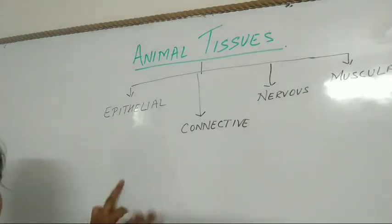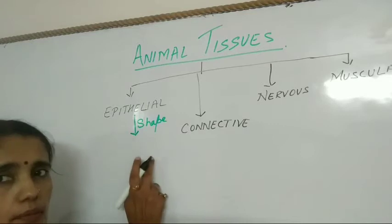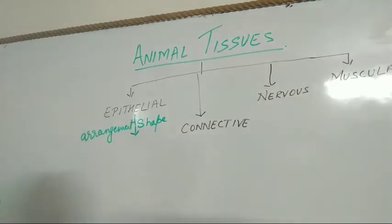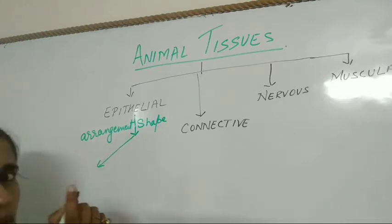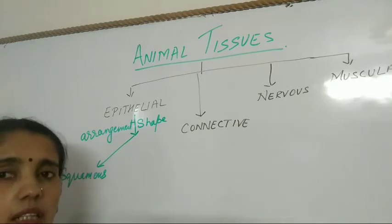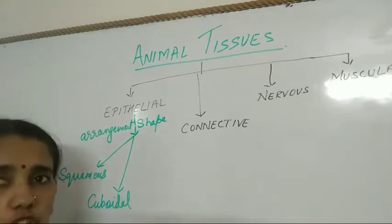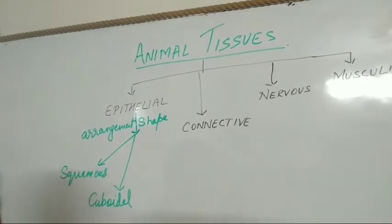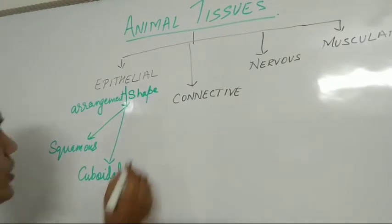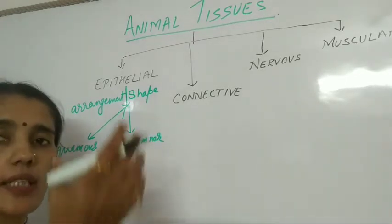Epithelial tissue is again classified on the basis of its shape and arrangement. It is of different types. First is squamous — by name only it is clear that these are square in shape. Next is cuboidal epithelial tissue, meaning they are cuboidal in shape. Next is columnar epithelial tissue — these are rectangular in shape, or we can say they are in the shape of a column.